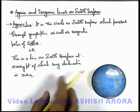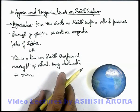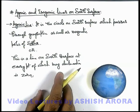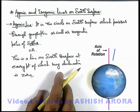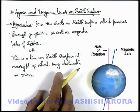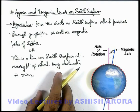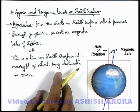Let us visualize it with the help of this picture. Here we can see, if this is the earth, and these are the earth's rotation axis and magnetic axis, which are inclined approximately at 11 degrees. Now in this situation, if we just draw a circle on earth which is in the plane of intersection of earth, it is a diametrical plane.